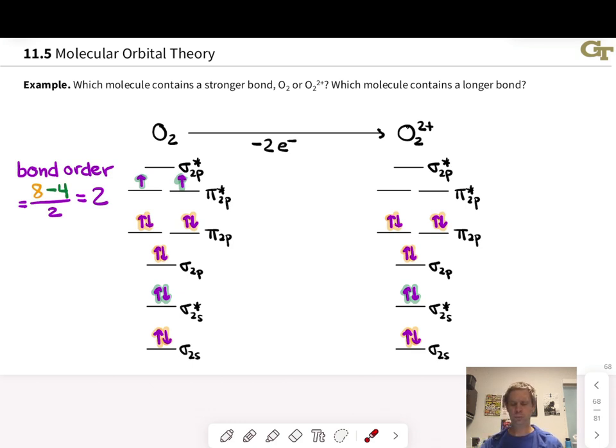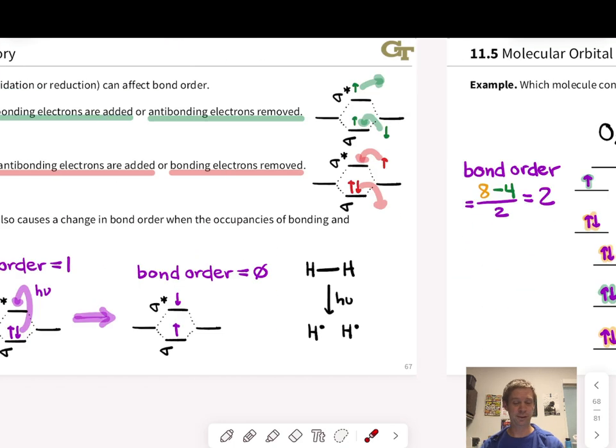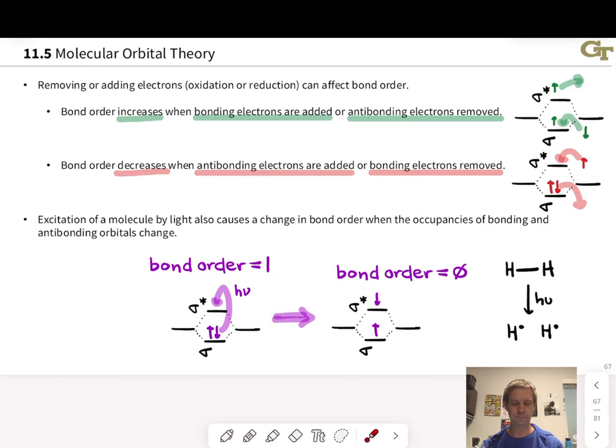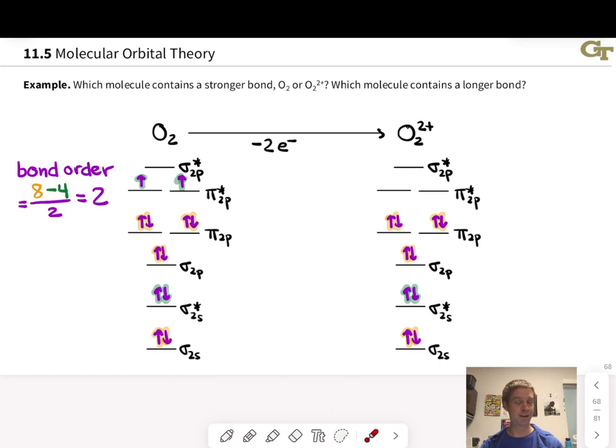What about O2 2+? Well, we've lost two of the antibonding electrons. And if we think back to our general principle here, that when antibonding electrons are removed, the bond order increases, we already have a pretty good idea of what's going to happen here. O2 2+, the dication, is going to contain a stronger bond than O2 due to its higher bond order. And the bond order math confirms this. We have now only two antibonding electrons, still have the eight bonding electrons. The net bond order now is 3.